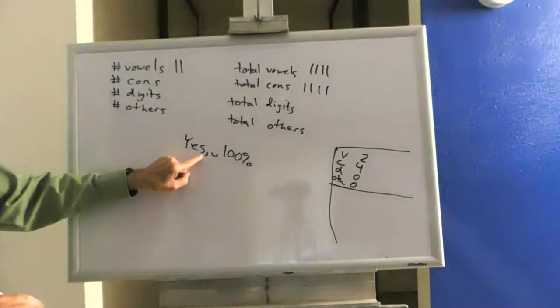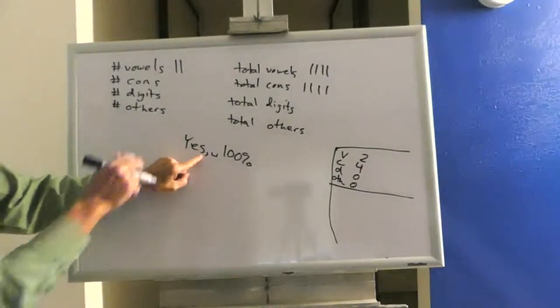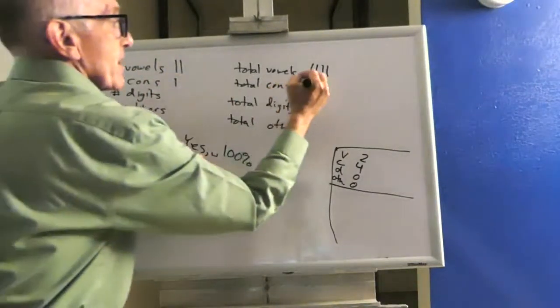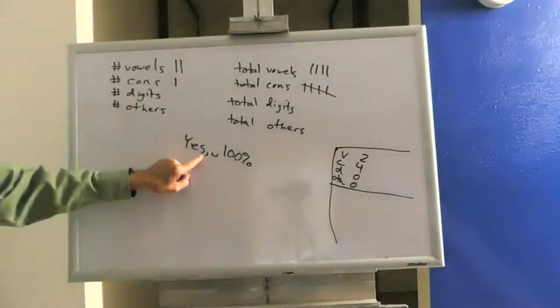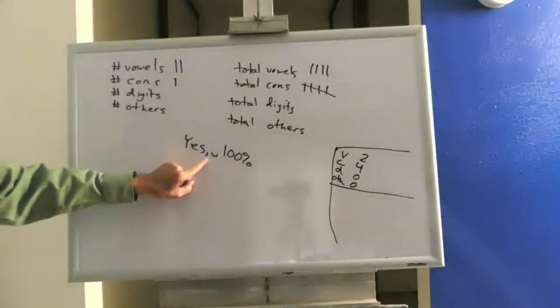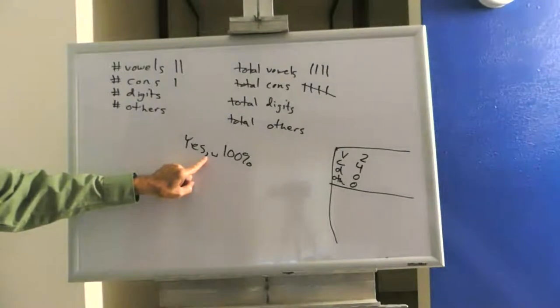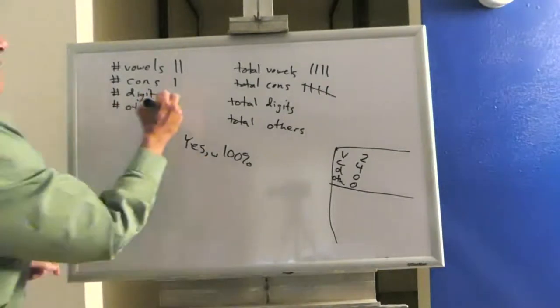Is S a vowel? No. Is S a consonant? Yes, it is. And I add that hash mark. I move on to the comma. Is comma a vowel? No. Is comma a consonant? No. Is it a digit? No. That means it's an other.